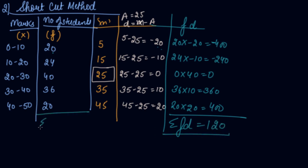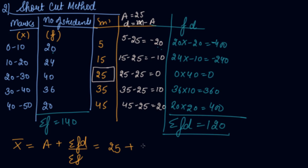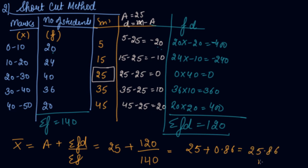Σf = 140. Now apply the shortcut method formula: x̄ = A + (ΣFD ÷ Σf) = 25 + (120 ÷ 140) = 25 + 0.86 = 25.86 marks. This confirms the answer using the shortcut (deviation) method for continuous series.